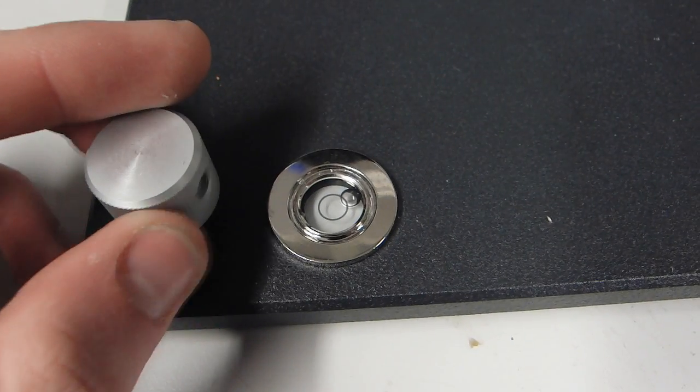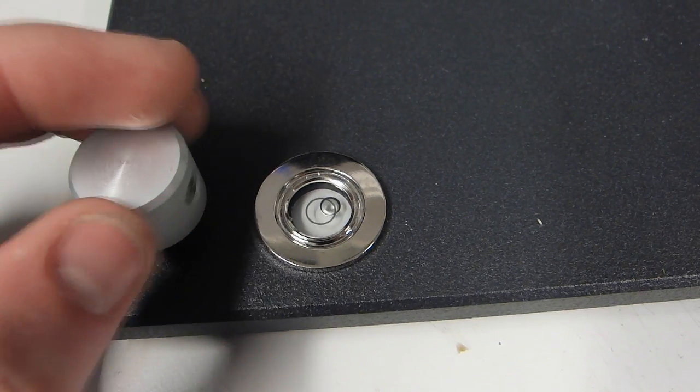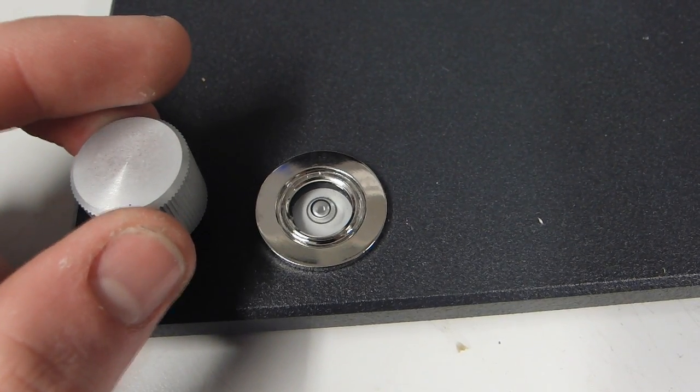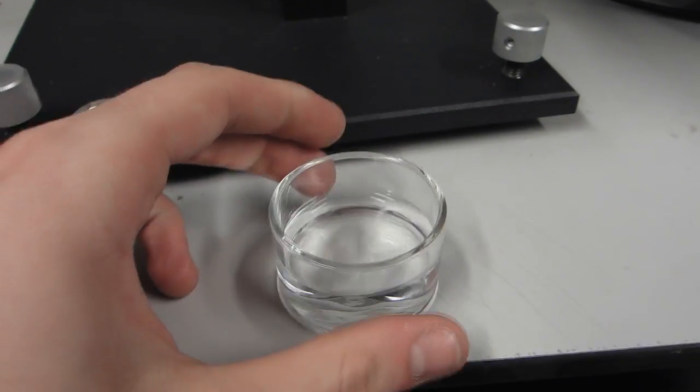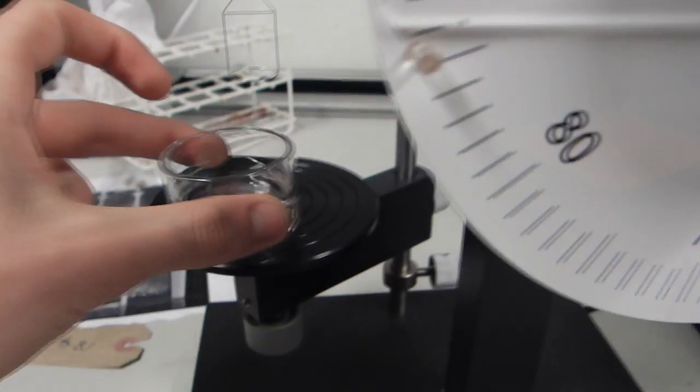To begin making a measurement, we first move the level adjustment dials until the spirit bubble is centered. We then take the sample and place it on the stage.